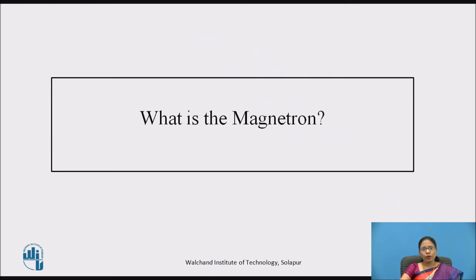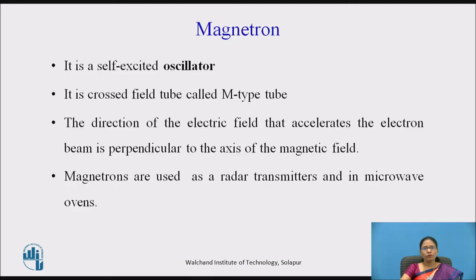What is a magnetron? A magnetron is a self-excited oscillator. It is a cross-field tube, called an M-type tube. The direction of the electric field that accelerates the electron beam is perpendicular to the axis of the magnetic field. Magnetrons are used as radar transmitters and in microwave ovens.